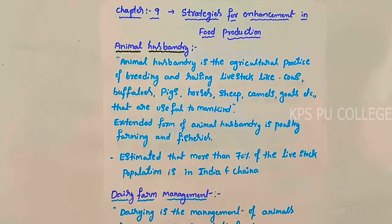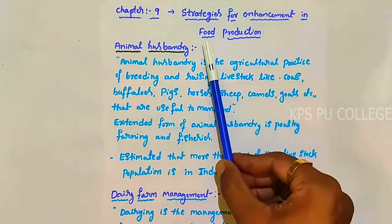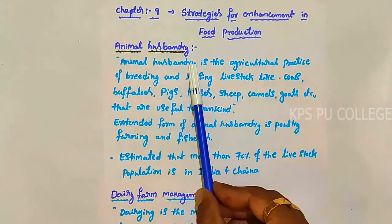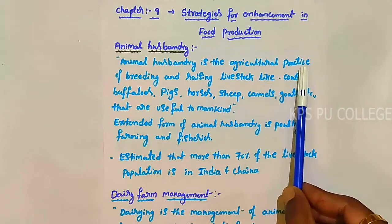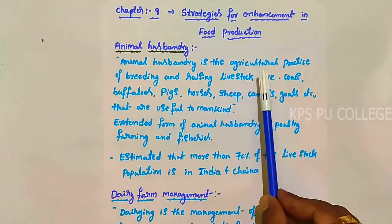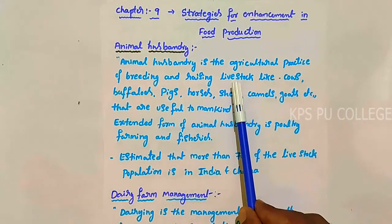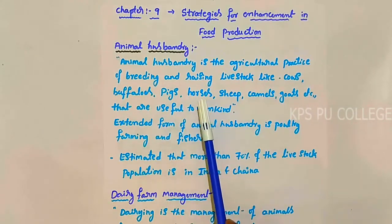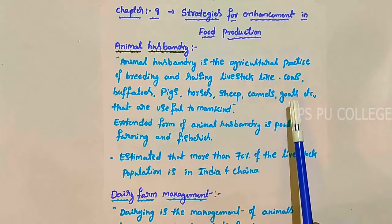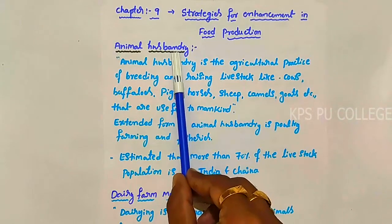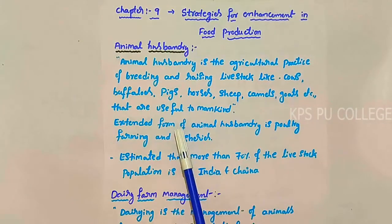Good morning students. This chapter is on strategies for enhancement in food production, and the topic is animal husbandry. Animal husbandry is the agricultural practice of breeding and raising livestock — animals like cows, buffaloes, pigs, horses, sheep, camel, goats, etc., that are useful to mankind.